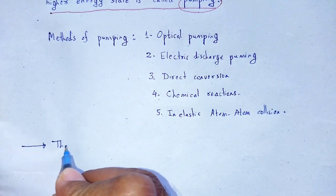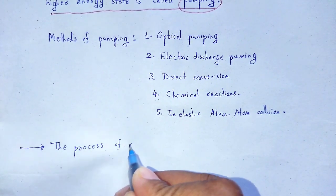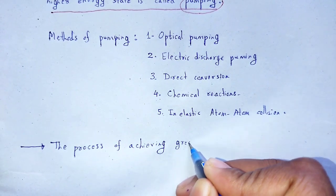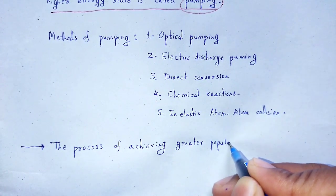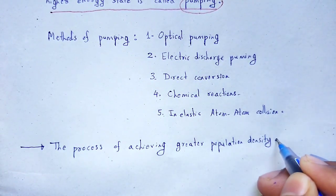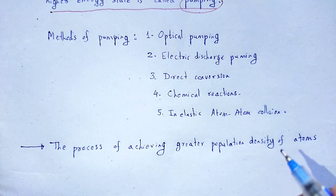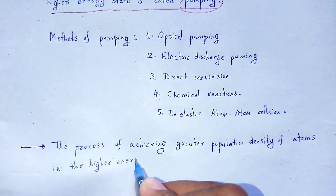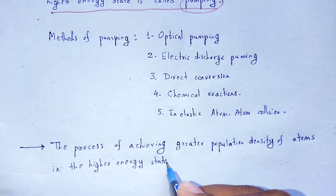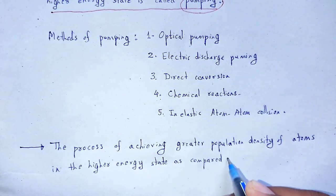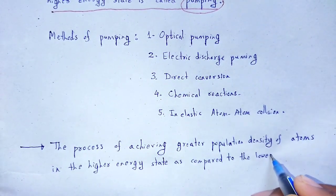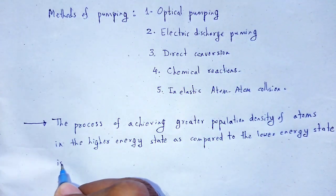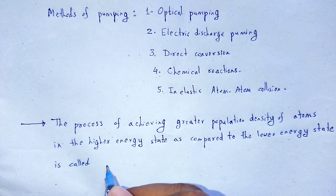The process of achieving greater population density of atoms in the higher energy state as compared to the lower energy state is called population inversion.